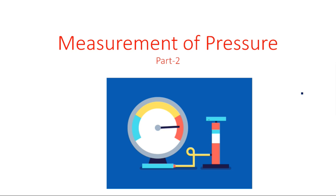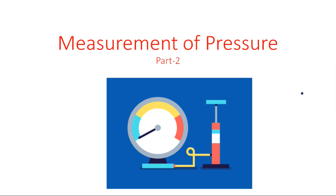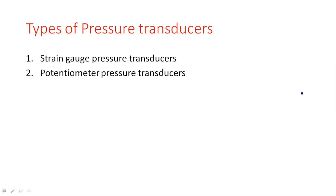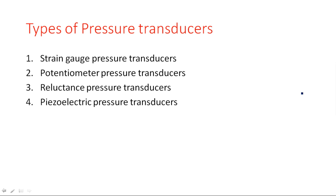Hi everyone. In this video I am continuing the measurement of pressure. In the previous video I gave you the types of various pressure measurements — absolute pressure measurement, gauge pressure measurement, and differential pressure measurement. Now in this video I am going to explain the types of transducers available to measure pressure. The types of pressure transducers are: strain gauge, potentiometer, reluctance, piezoelectric, and capacitive pressure transducers.